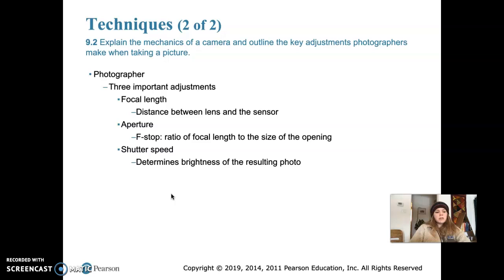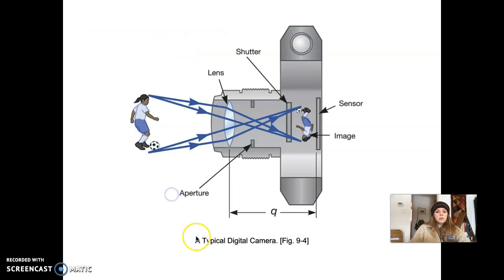There are three different adjustments photographers make when taking pictures. First is focal length — the distance between the lens and the sensor, labeled Q in the diagram. You can zoom the lens in or out by physically moving the lens inward or outward, by changing the lens, or by digital means using software. With an old-school camera you physically move the lens; with a digital camera or phone, the software handles the adjustment without any physical movement.